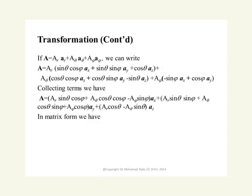If you are given a vector written in a spherical coordinate system with three components — A_R in the R direction, A_theta in the theta direction, and A_phi in the phi direction — we simply eliminate the unit vectors in the directions of R, theta, and phi and replace them by the expansions for AR, A_theta, and A_phi that we obtained in the previous slide.